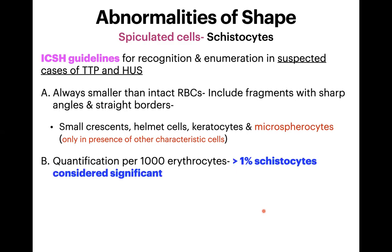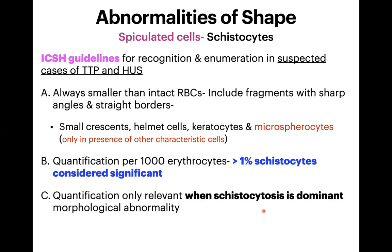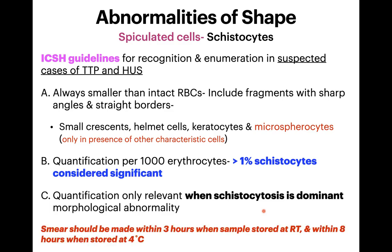To calculate the percentage, count at least 1000 erythrocytes — at either 40x or 100x, whichever you are comfortable with. More than 1% schistocytes is considered significant for TTP and HUS. However, quantification is only relevant when schistocytosis is the dominant morphological abnormality. In megaloblastic anemia, for example, schistocytes are not the dominant finding, so quantifying them there is not clinically relevant.